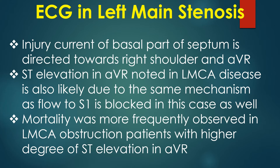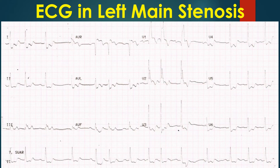Mortality was more frequently observed in left main obstruction patients with a higher degree of ST elevation in AVR. Another ECG showing ST elevation in AVR and diffuse ST segment depression in inferior and lateral leads suggests left main coronary artery stenosis. ST elevation in AVR greater than that in V1 is also suggestive of left main disease.